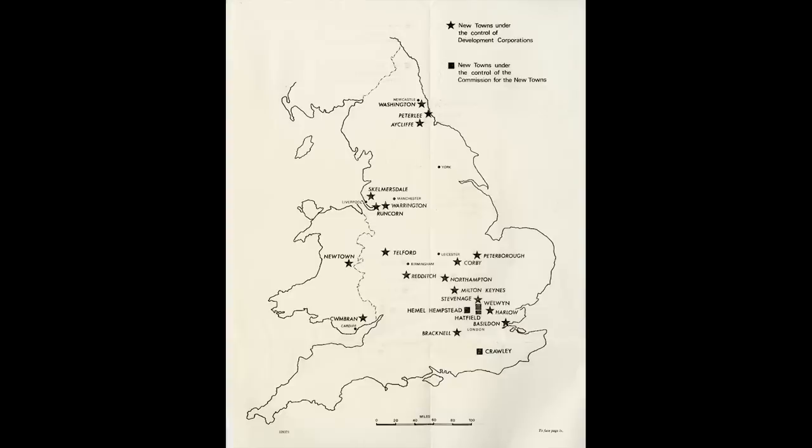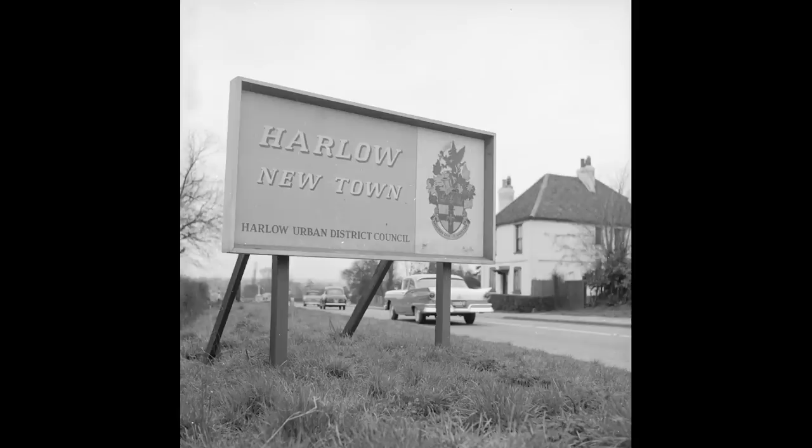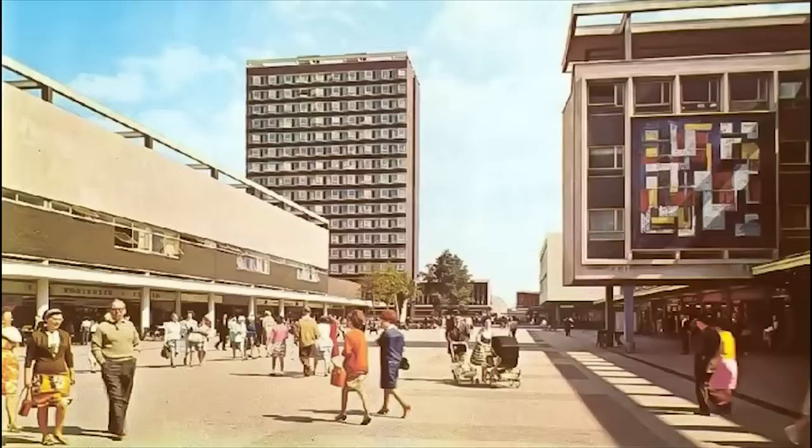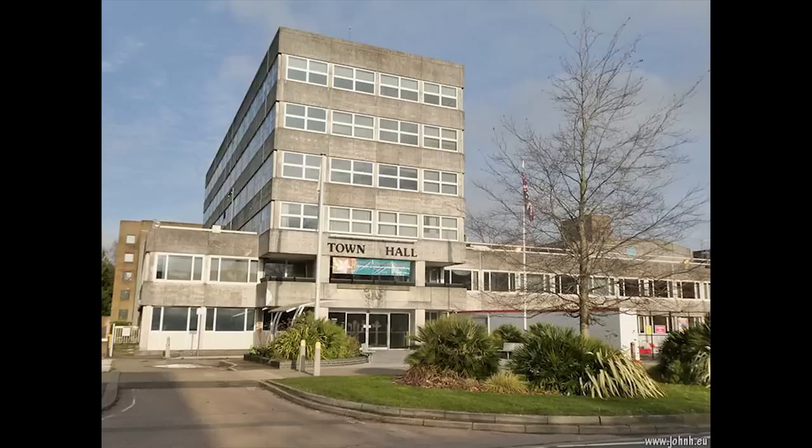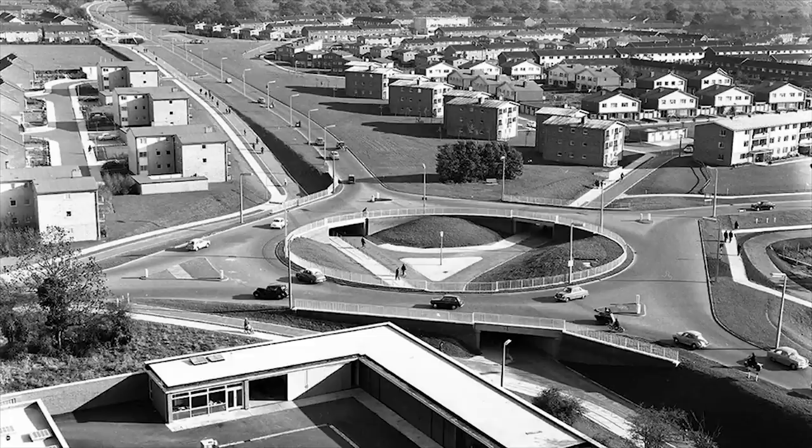Houses are in short supply, and so is money, because it turns out going to war is quite expensive. In 1946, the government put in place the New Towns Act. This piece of legislation would allow the government to allocate larger areas of land for new towns to be built on. The idea was that the New Towns Act would solve the country's housing crisis, and by the mid-1950s, the scheme was well underway, and it gave us wonderful towns such as Basildon, and Crawley, and Stevenage.